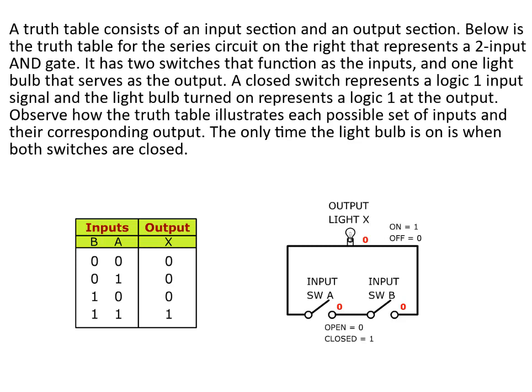A truth table consists of an input section and an output section. Below is the truth table for the series circuit on the right that represents a two input AND gate. It has two switches that function as the inputs and one light bulb that serves as the output.